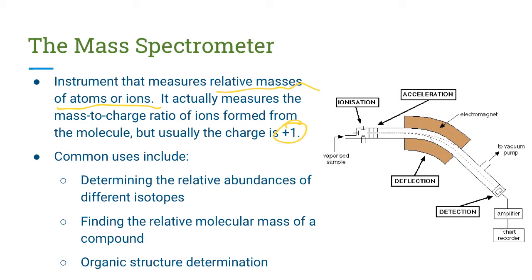We have seen in the past an application where we figured out the relative abundances of different isotopes for an element using the MS spectra. We have also seen an application of finding the relative molecular mass of a compound from a mass spectrometer. But we haven't seen the application where we use MS data to determine the organic structure of a particular compound. This is what we're going to focus on in this video.